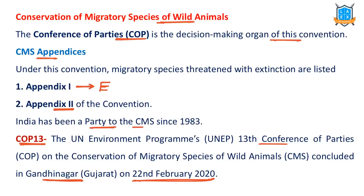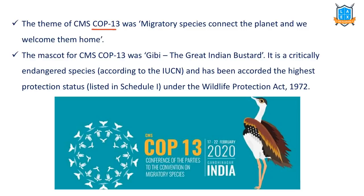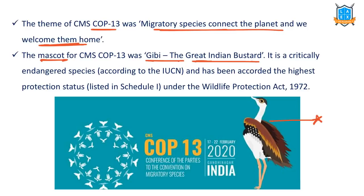India has been party to the Convention on Migratory Species since 1983 — since its inception. The theme of COP 13 was 'Migratory Species Connect the Planet and We Welcome Them Home.' The mascot of CMS COP 13 is Gibi — the Great Indian Bustard. It is a Critically Endangered species. IUCN has listed it as Critically Endangered, and India's Wildlife Protection Act protects it under Schedule 1.